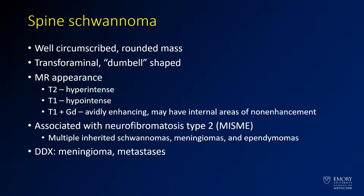What we have here is a case of a spine schwannoma. Spine schwannomas are well-circumscribed rounded masses. They tend to arise in the neural foramina because the neural foramina gives them a waist. They can be dumbbell-shaped, waisted at the area of the neural foramina. They are hyperintense on T2, hypointense on T1, and avidly enhancing.